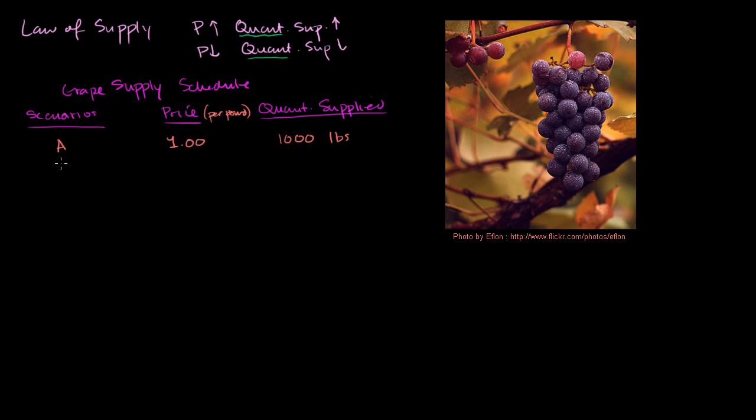Now, let's take scenario B. Let's say the price goes up to $2. Well, now, not only would we produce what we were producing before, but we might now want to maybe buy some more land, land that might have had other uses, land that's maybe not as productive for grapes, but because now we can get more for grapes, maybe now we are willing to produce 2,000 pounds.